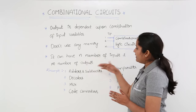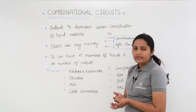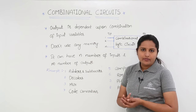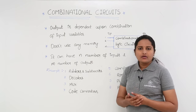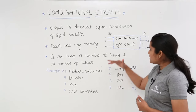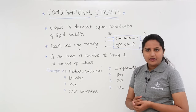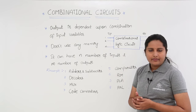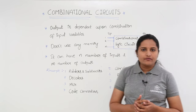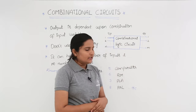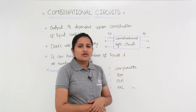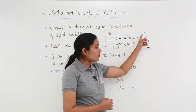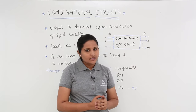It can have n number of inputs and m number of outputs. This is the basic block diagram of a combinational circuit, showing n number of inputs and m number of outputs. The inputs are always called excitations for combinational circuits and the output is called the response of the circuit.